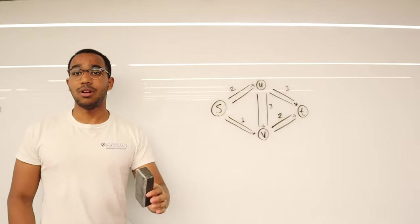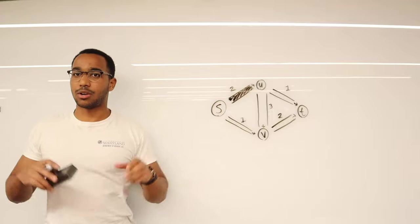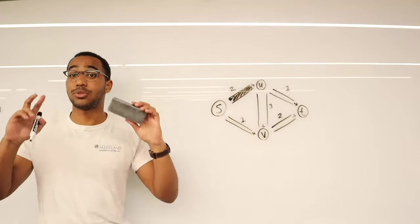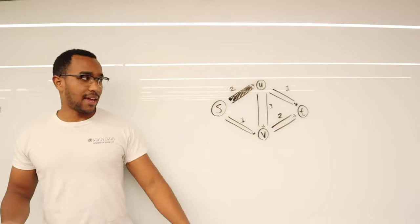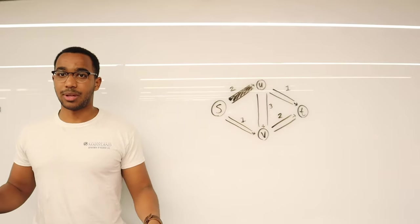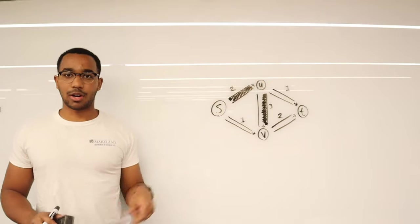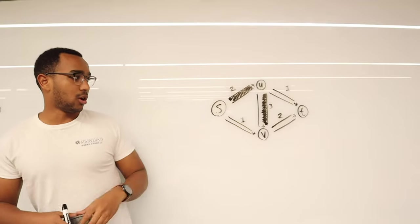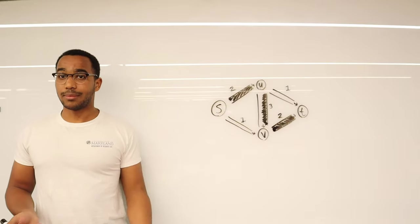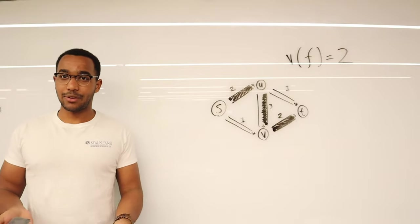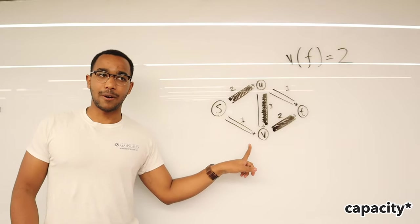We could push as much capacity as possible out of the largest edge coming off the start, so we push two flow out. Now there are two units of this conceptual flow at vertex U. There's also a flow conservation rule: if two units of water go into U, two units must leave U as well. We could be greedy again and push as much flow as possible through the three-capacity edge. So we push two units of water down through U, V, and then to T, filling that final pipe. The value of our flow is two.